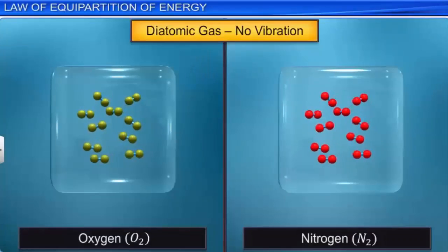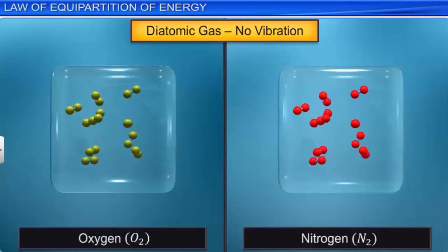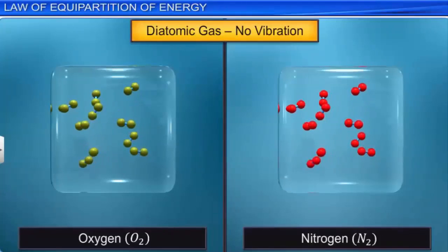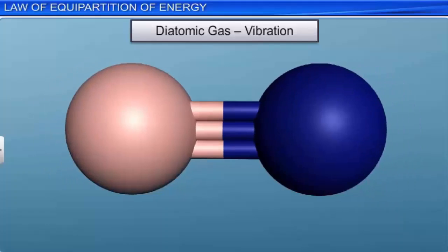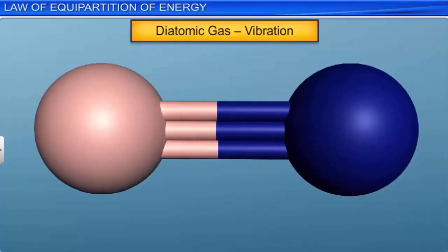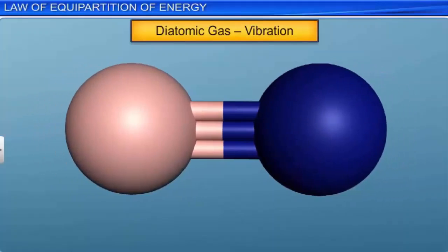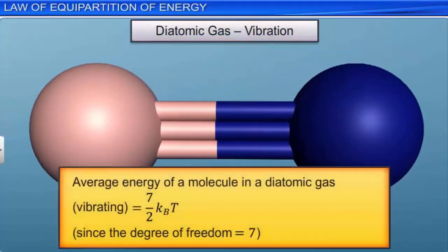In the case of a diatomic gas, if the molecule does not vibrate, then the average energy of a molecule is equal to (5/2)k_B·T, because the degree of freedom is 5. If the molecule vibrates, then the average energy of a molecule in a diatomic gas is equal to (7/2)k_B·T, because the degree of freedom is 7.